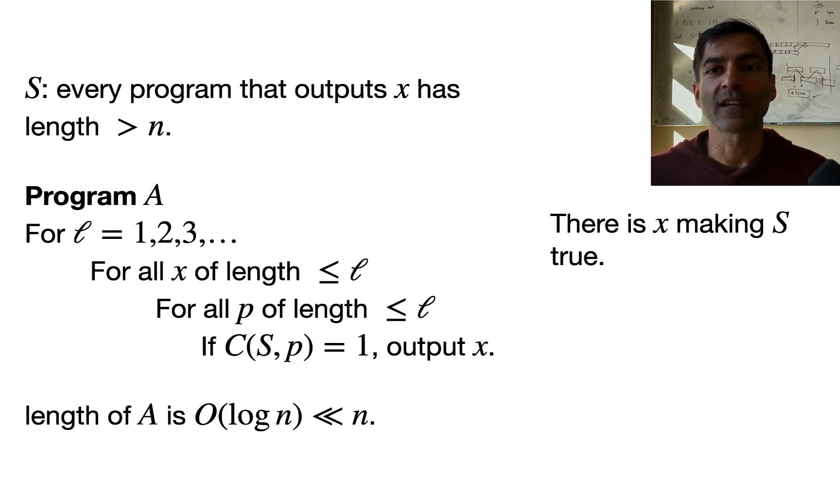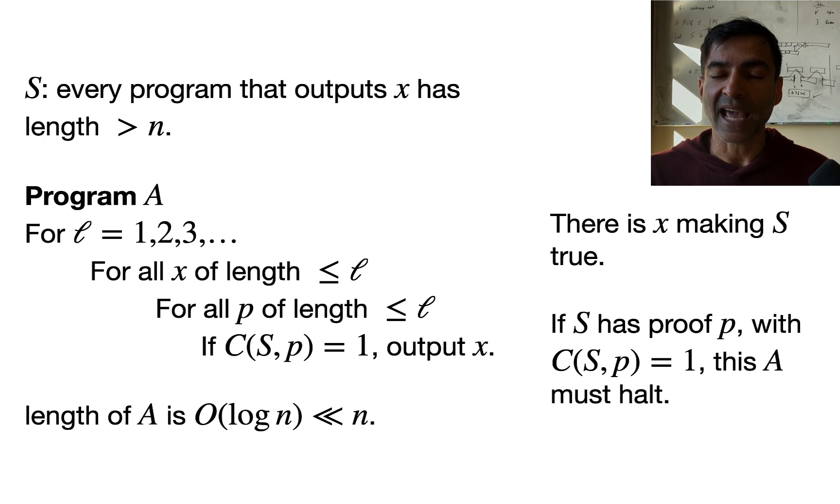In fact, there are infinite number of x for which the statement S is true. And if any one of those x's had a proof p, then this program would find that proof. It would eventually find that proof and it would halt.